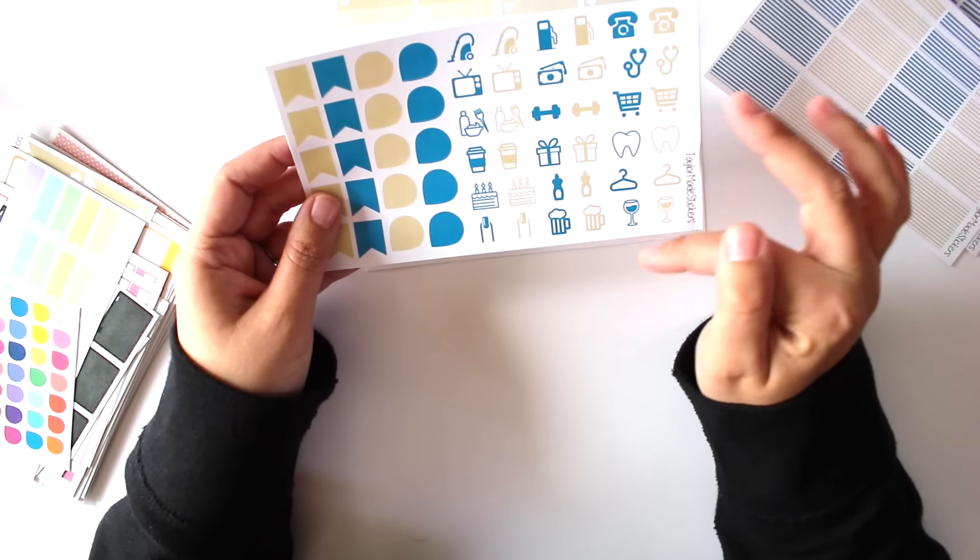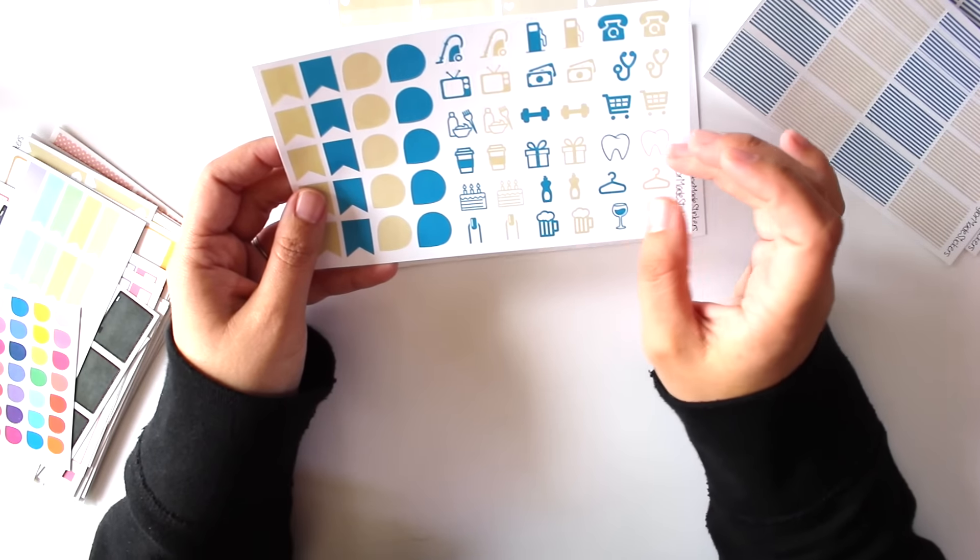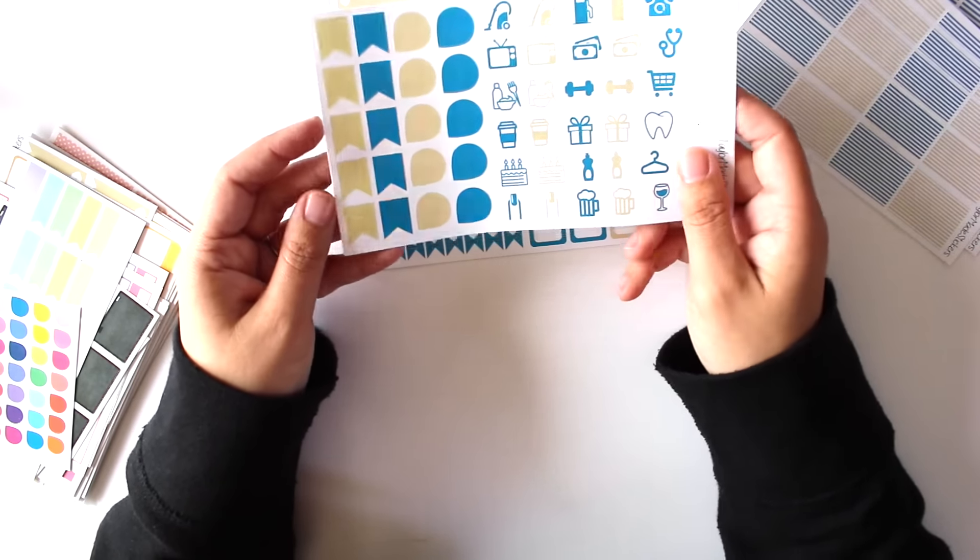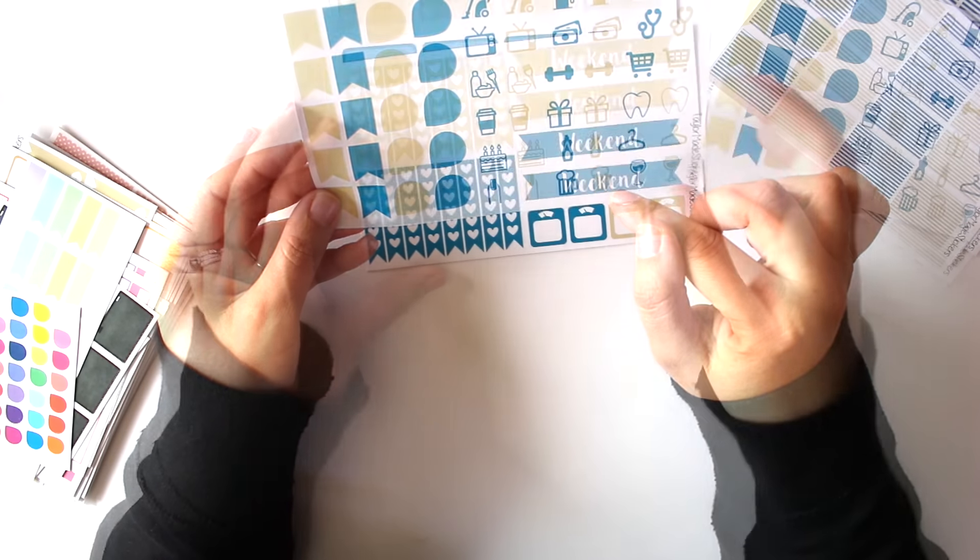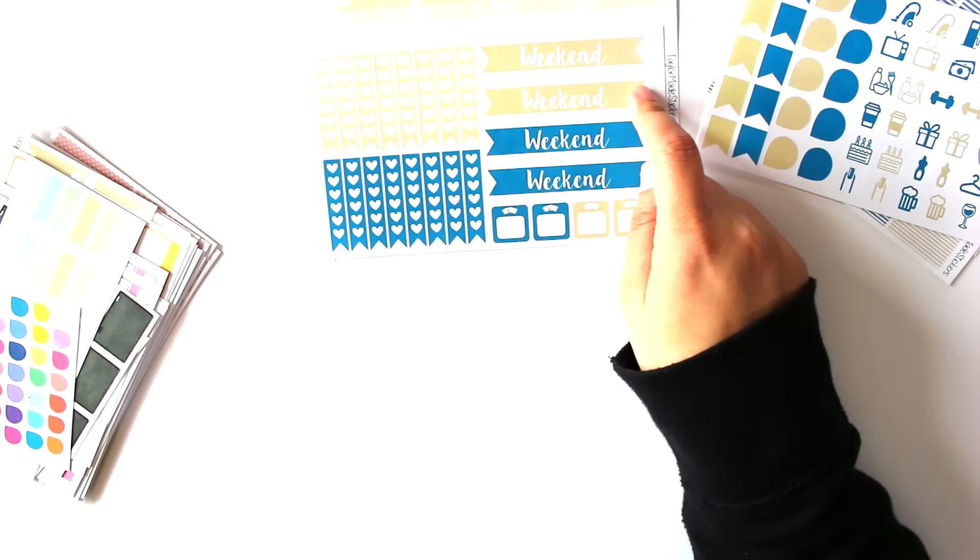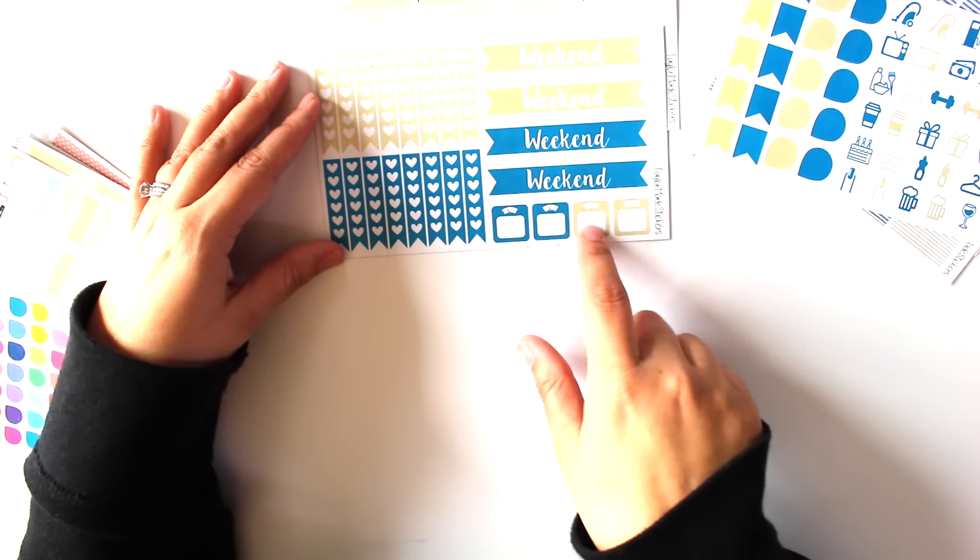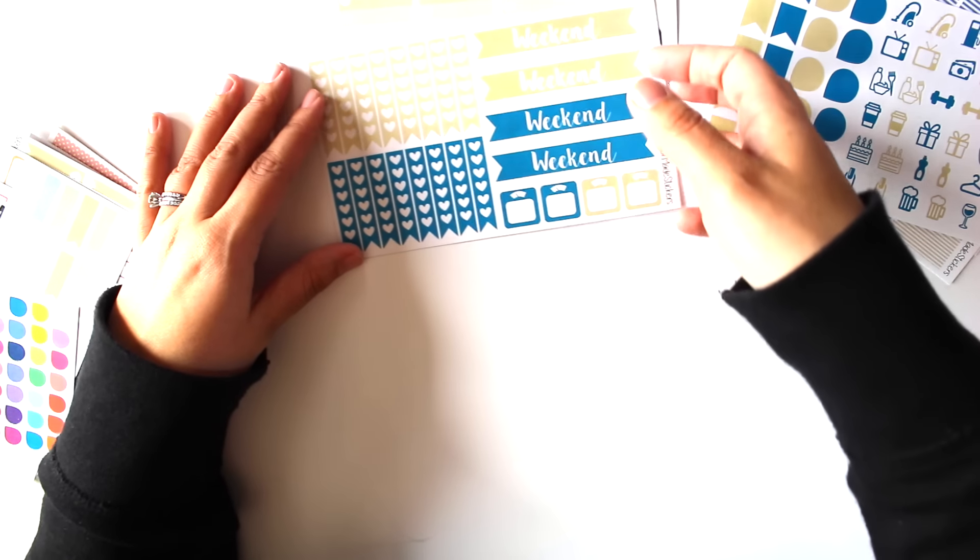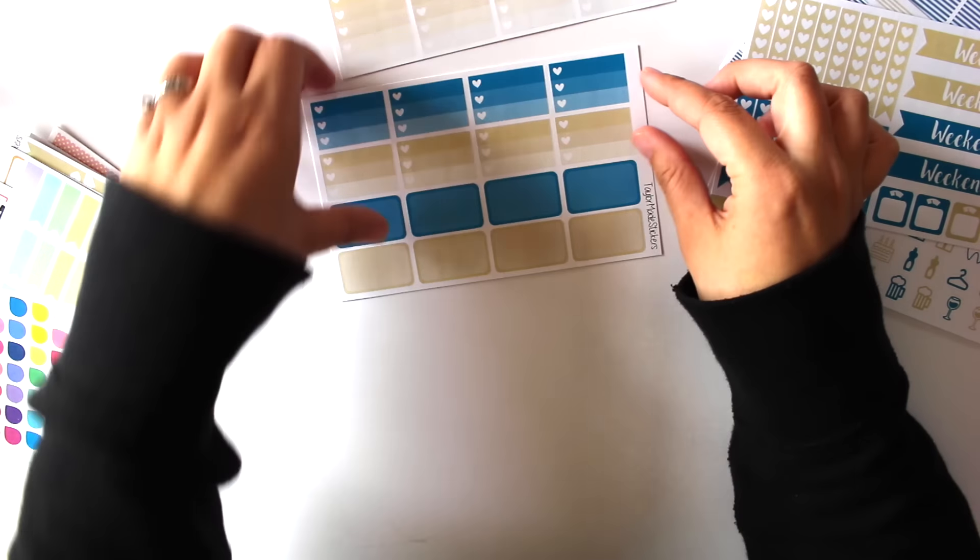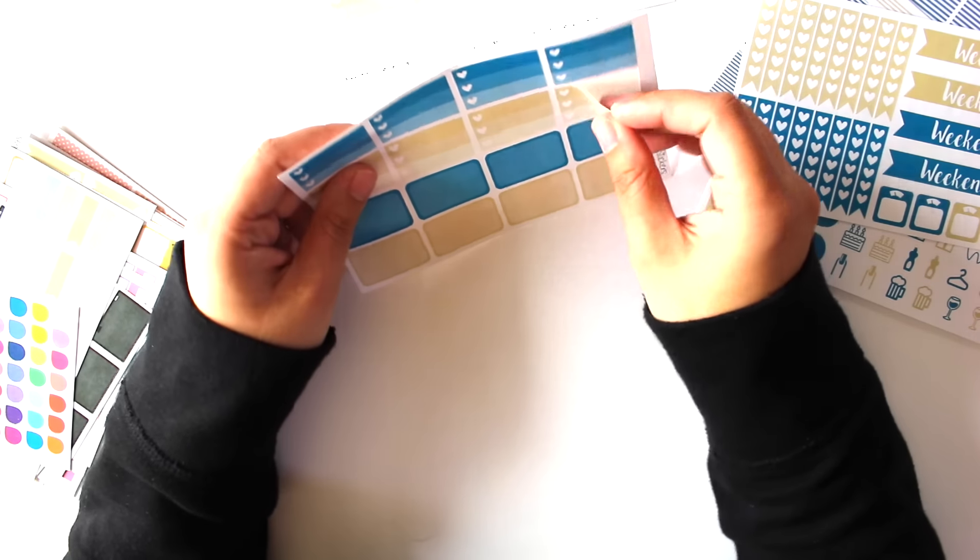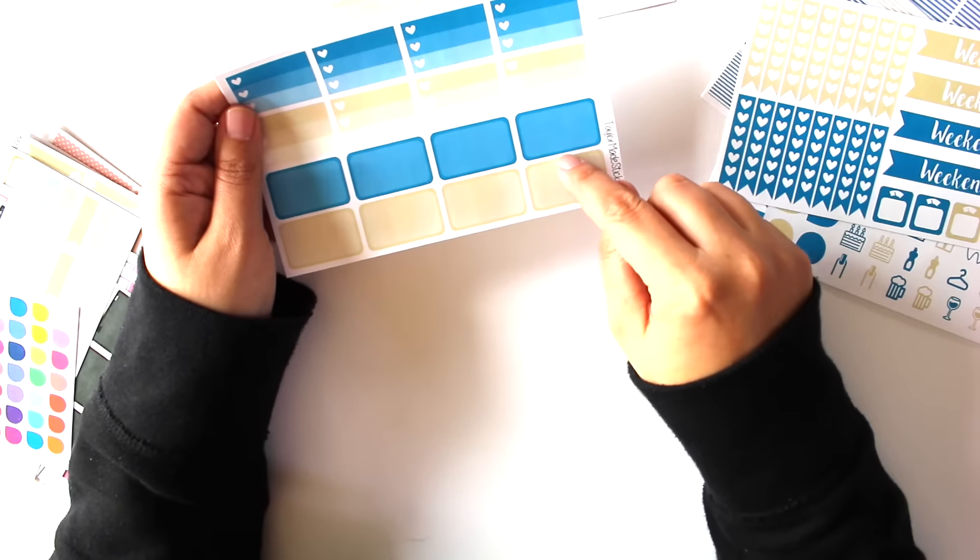These are full boxes and then she gives you some, it looks like half boxes and possibly some covers, some header covers if you wanted to cover that up and maybe write what you exactly want that header to be. And then she gives you some mini like to-do stickers. There's some phones, doctor's appointments, grocery shopping, dentist appointments, hangers, very cute. Good selection of activities, nail appointments, beer, wine. I really like these weekend banners. You guys know those are one of my favorite stickers along with some checklists. These look like scales to track your weekly weigh-in, which I know a lot of people track, so that would be very functional. Some more half boxes.